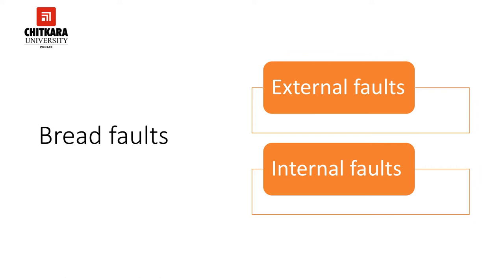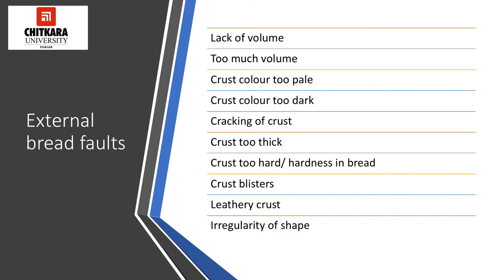A skilled baker examines the bread carefully by reasoning, reductions, elimination and if necessary by experimentation. He should be able to detect the cause of fault and subsequently find the solution. The bread faults are classified into two ways: external faults and internal faults. External bread faults include: lack of volume, too much volume, crust color too pale, crust too dark, cracking crust, thick crust, hardness in the bread, blisters on the crust, leathery crust, and irregularity of the shape.